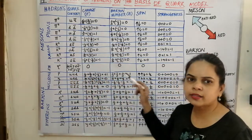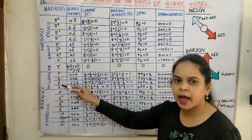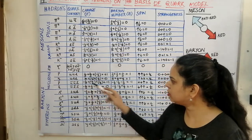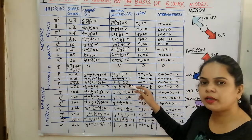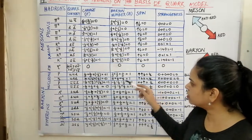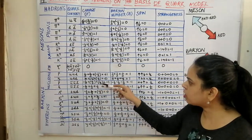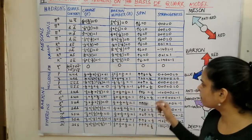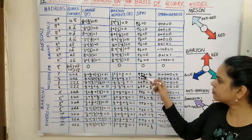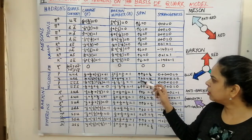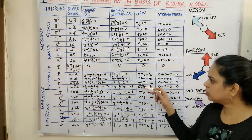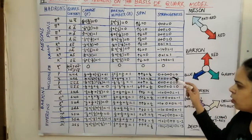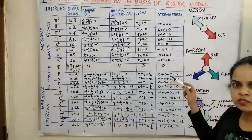For the anti-proton, all quarks are replaced by anti-quarks: ū, ū, d̄. The baryon number is −1/3 − 1/3 − 1/3 = −1, and the charges are −2/3 − 2/3 + 1/3 = −1. The spin is 2 up and 1 down giving spin 1/2. For the anti-proton, the up-spins are inverted to down, so down + down + up gives spin 1/2. The strangeness is 0 for both proton and anti-proton since they contain no strange quarks.